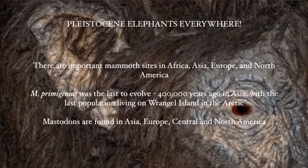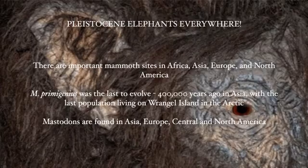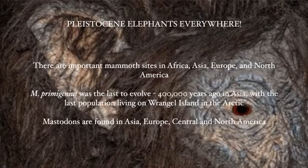There are important mammoths in Africa, Asia, Europe, and North America. Mammuthus primigenius was the last mammoth species to evolve, about 400,000 years ago in Asia, and its last population was living on Wrangel Island out in the Arctic Ocean. Mastodons are found in Asia, Europe, Central America, and North America, and they're actually found very locally.